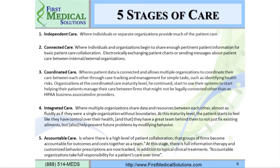We have five stages of health care. Stage one is independent care — separate organizations provide much of the care. We are migrating toward a connected care model where individuals and organizations share basic patient information through collaboration. The third is coordinated care, where patient data is passed through multiple organizations to create a health plan roadmap for each patient, keeping patients away from chronic illnesses and high-risk diseases.